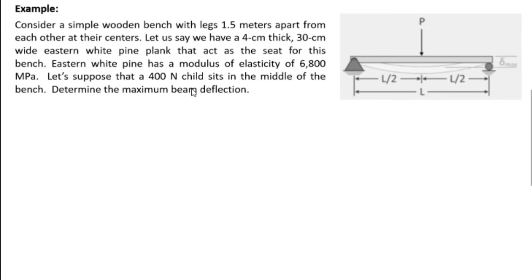Example 2: Consider a simple wooden bench with legs 1.5 meters apart from each other at their centers. We have a 4 cm thick and 30 cm wide Eastern white pine plank that acts as the seat for this bench. Eastern white pine has a modulus of elasticity of 6,800 MPa. Suppose a 400 Newton child sits in the middle of the bench. Determine the maximum beam deflection.